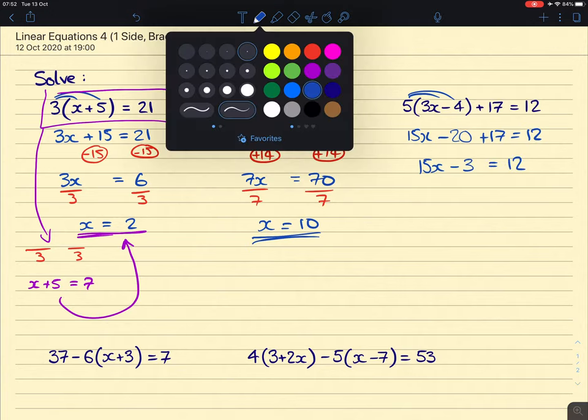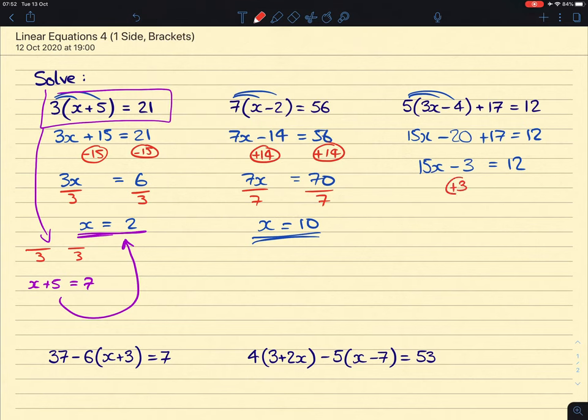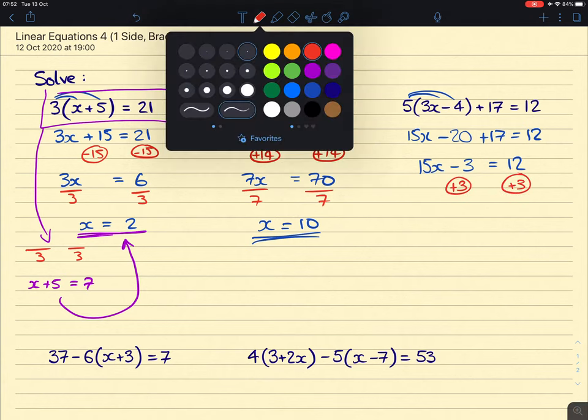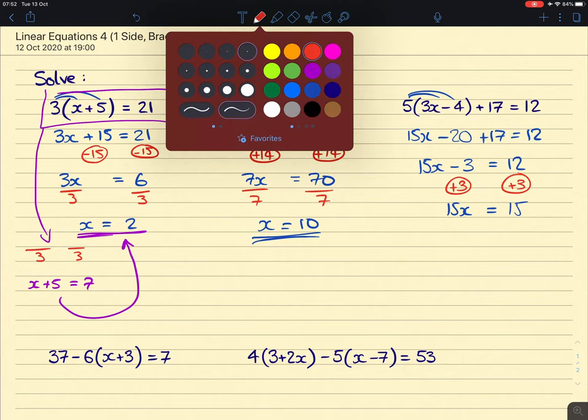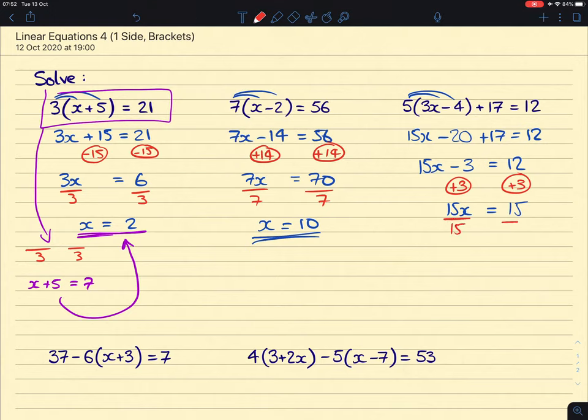Then we can rearrange. We're going to add 3 to make the minus 3 disappear. That will give us 15x equals 15, which after we divide both sides by 15, x will equal 1.